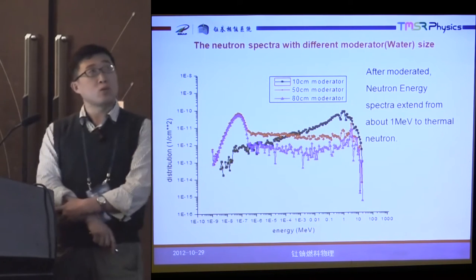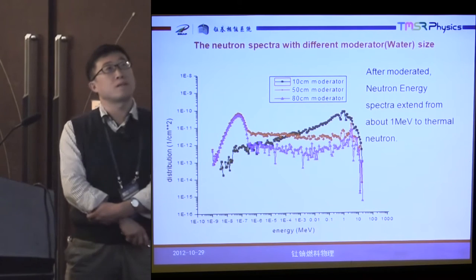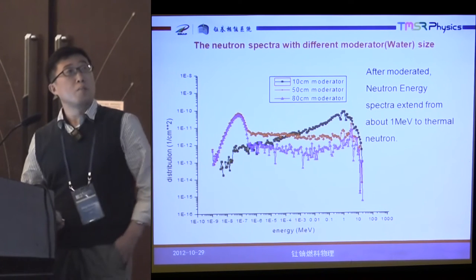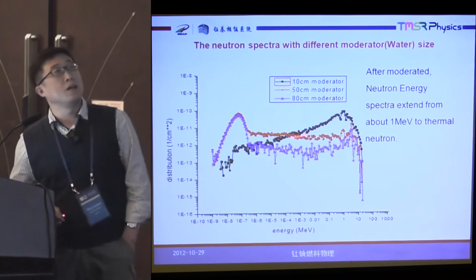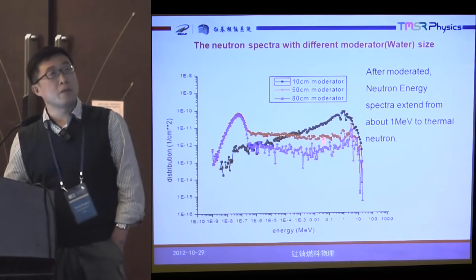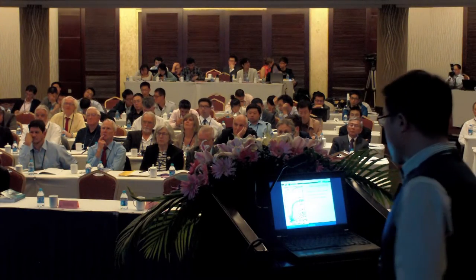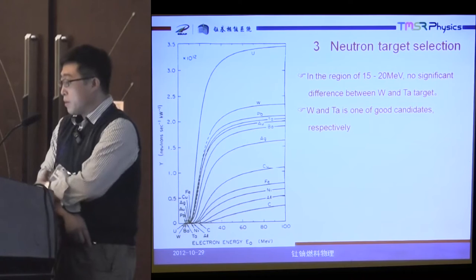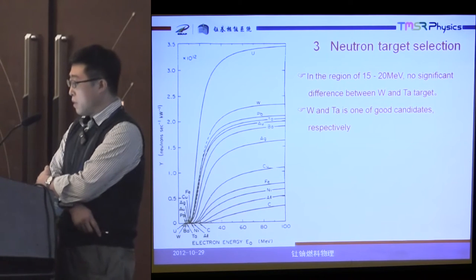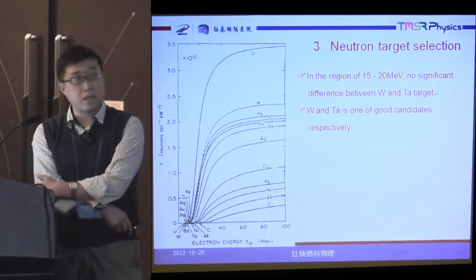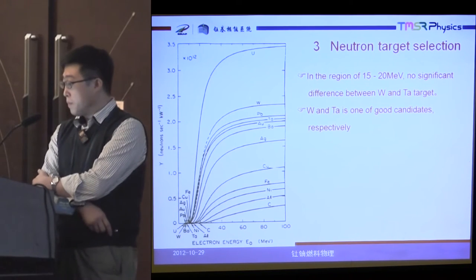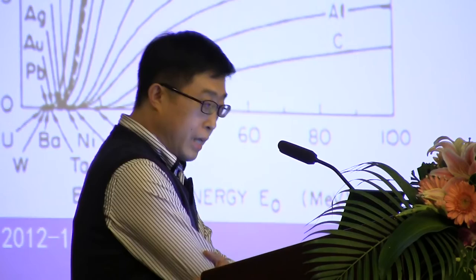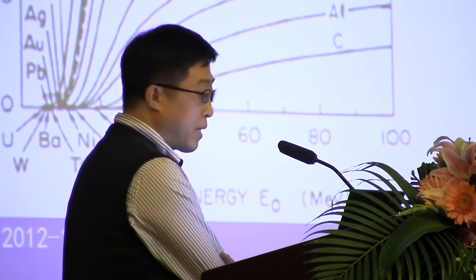The neutron spectrum with different moderators. After moderation, the neutron energy spectra extend from 1 MeV to thermal neutron energy. For neutron target selection: in the region of 15 to 20 MeV, no significant difference between tungsten and tantalum target. Tungsten and tantalum targets are both good candidates.